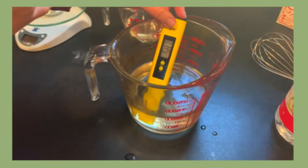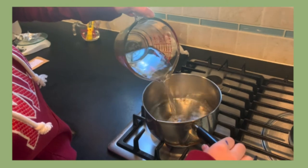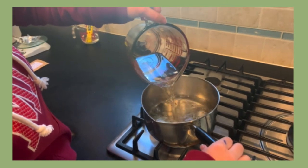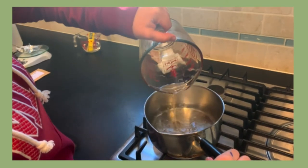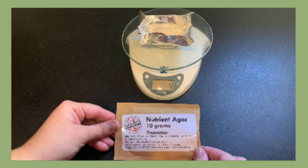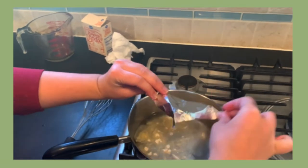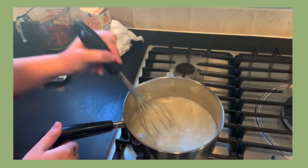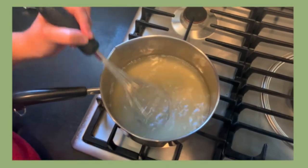Make sure to calibrate the pH meter beforehand. Transfer the liquid mixture to a pot on the stove and heat lightly. Measure 4 grams of nutrient agar using a weigh boat and a kitchen scale. Add the agar to the mixture and mix until fully incorporated. The mixture should be a clear, pale yellow color.